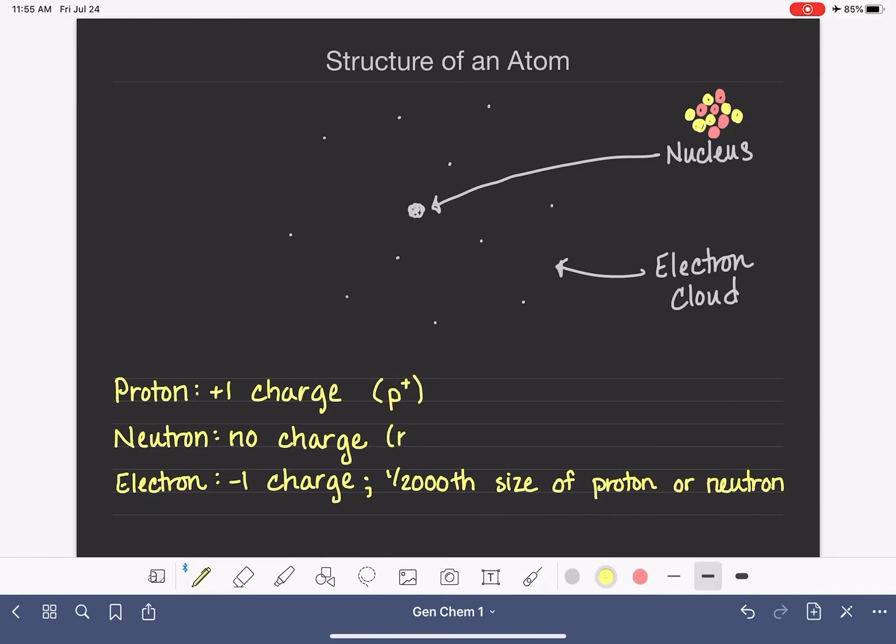Neutron is abbreviated a lowercase n with a zero superscript. The zero is to indicate that it is a neutral particle without a charge.